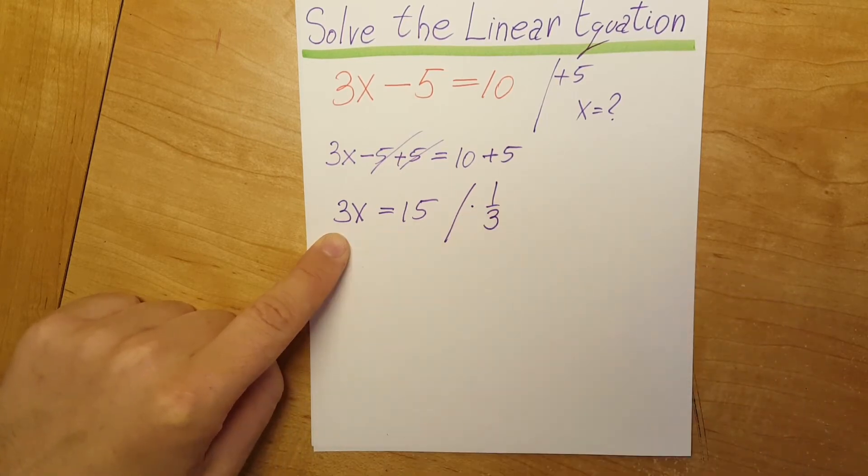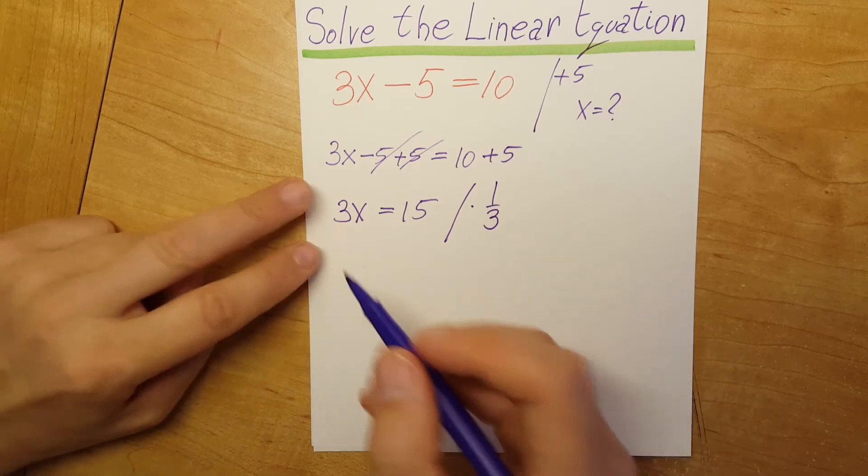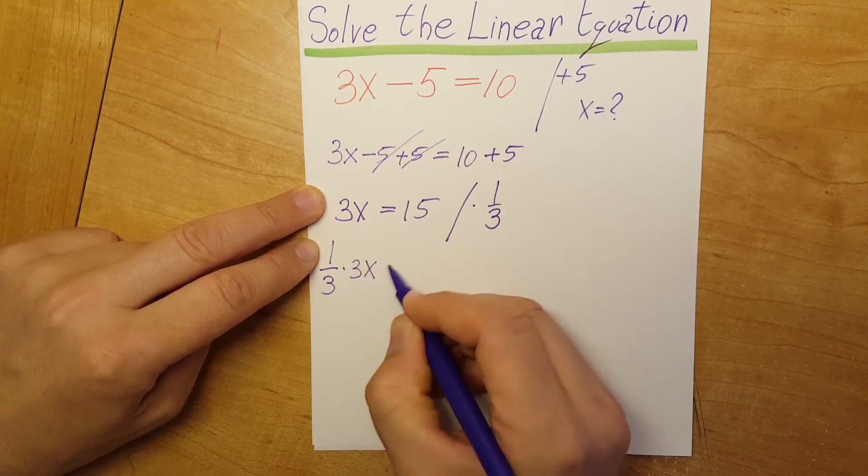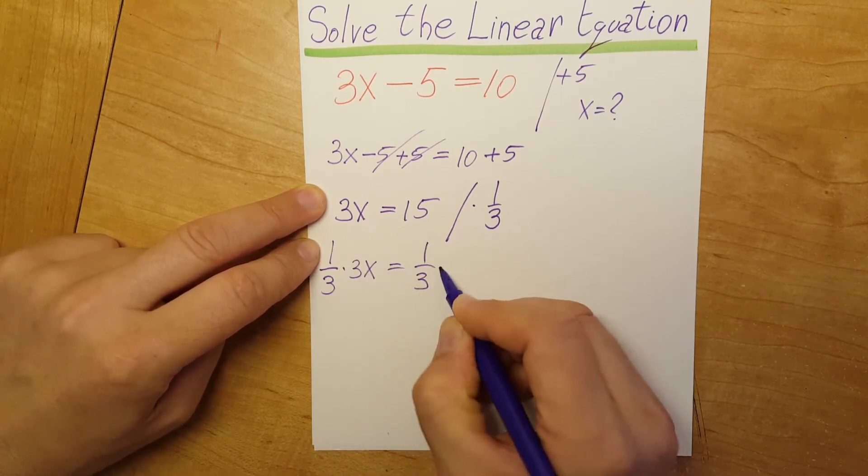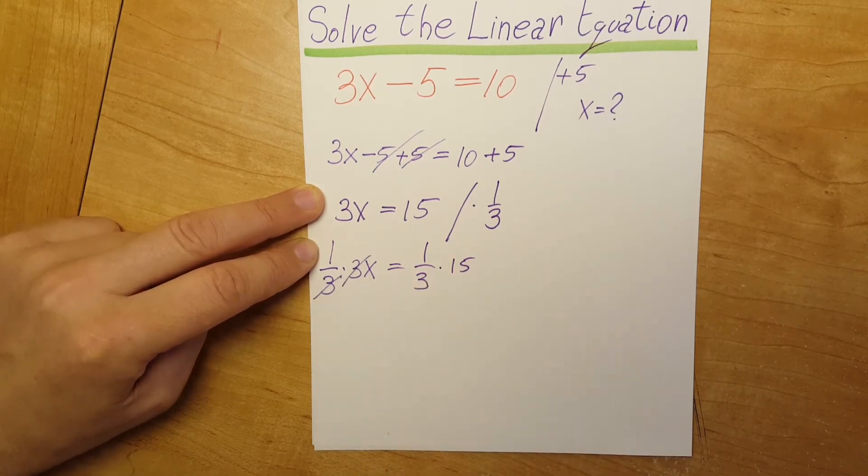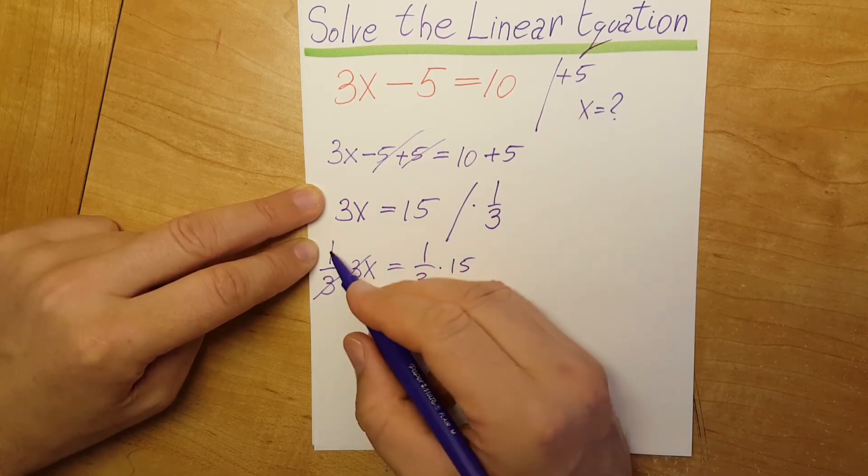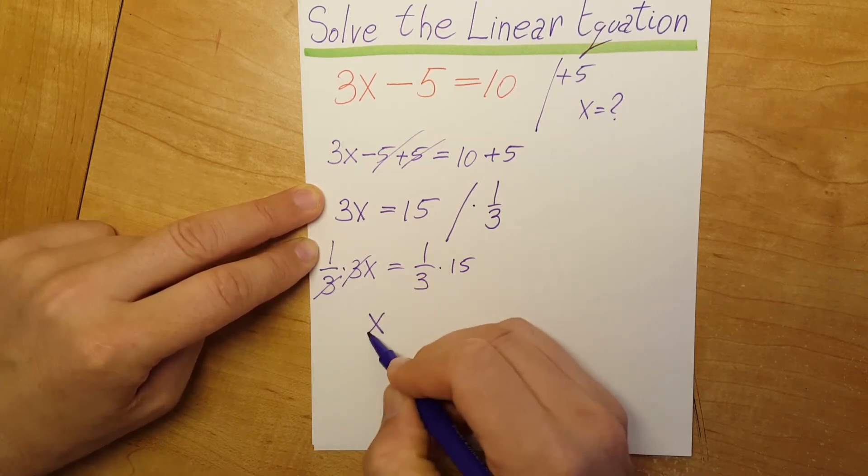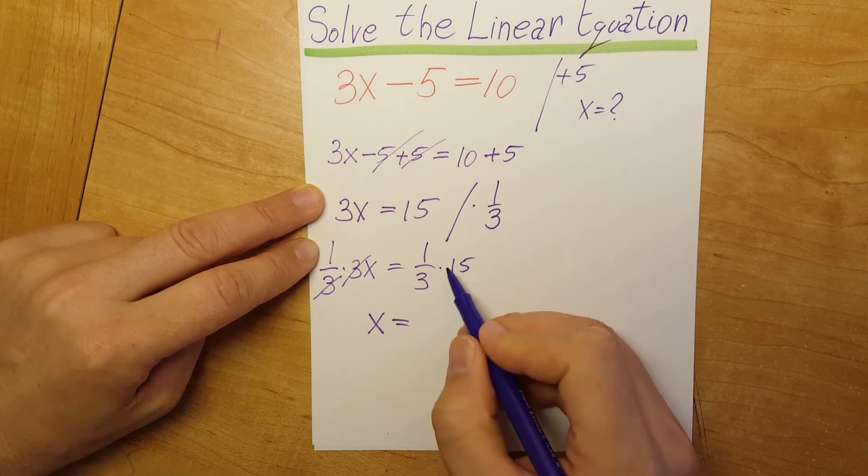So 1/3 times 3x equals 1/3 times 15. This three with this three cancels out. 1 times x is x, equals 1/3 times 15, that's 15 divided by 3, which is 5. And there you go, we have our answer.